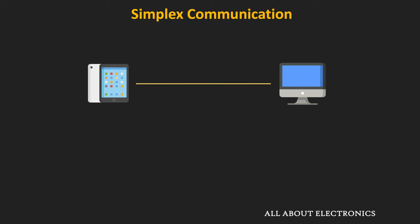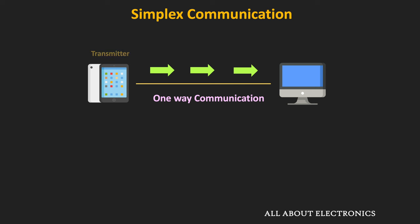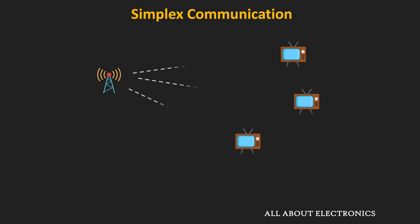Simplex communication is basically a one-way communication. The data transmission can happen only in one direction. The device which transmits the data is called the transmitter, and the device which receives it is known as the receiver. Since it is one-way, data transmission in the other direction is not possible. Radio and TV broadcasting are examples of simplex communication, because in broadcasting there is only one-way communication.